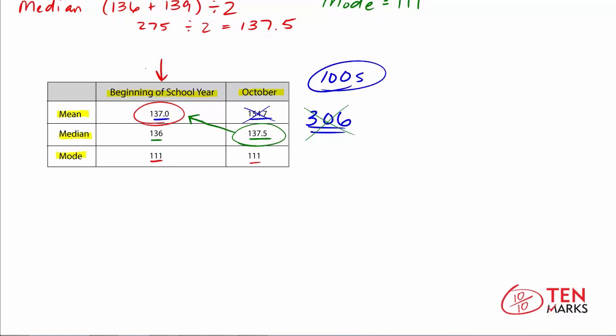Which measure would Max use if he wanted a single number summary for how many calories most students are drinking when they buy from the vending machine? He wants to know the most popular or common data point — the one with the highest frequency — and that is the mode. So if Max wanted to know how many calories most students are drinking, he would look to the mode, which is 111 in both cases. In this lesson, we've learned how to interpret stem and leaf plots and practiced finding measures of center. Thanks for watching.